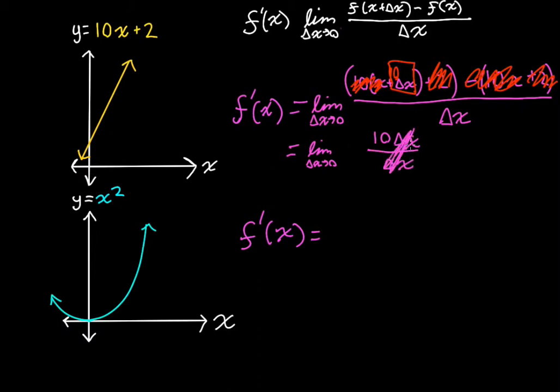We can just cancel these out. So we have the limit of 10 as delta x goes to 0. Delta x is not involved in this equation, so this doesn't mean anything. So the derivative, f prime of x, the slope at any given point x is going to be equal to 10.